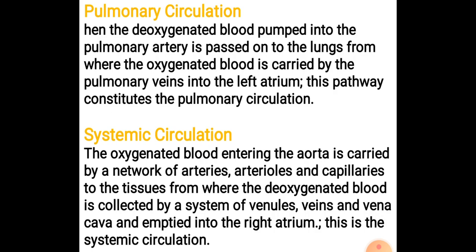The main function of pulmonary circulation is to carry deoxygenated blood from the right ventricle through the pulmonary artery to the lungs. After oxygenation in the lungs, the blood returns via the pulmonary vein to the left atrium. This completes pulmonary circulation.